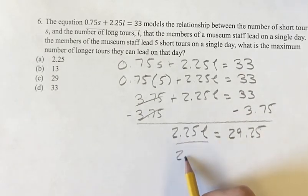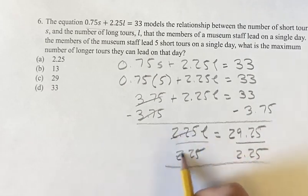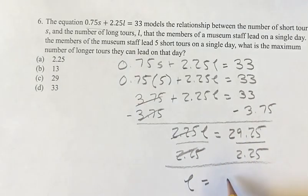Isolating l, divide both sides by 2.25. This cancels and we get l is equal to 29.25 divided by 2.25, which is 13.